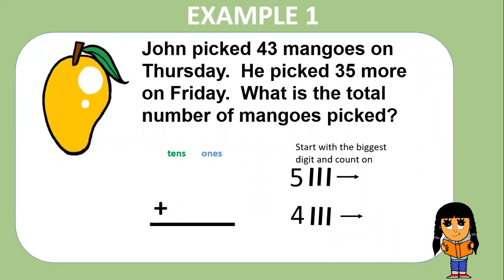Example one. John picked 43 mangoes on Thursday. He picked 35 more on Friday. What is the total number of mangoes picked? Don't forget the steps. Step one, add the ones. Step two, add the tens.